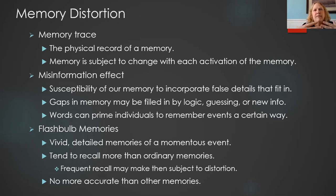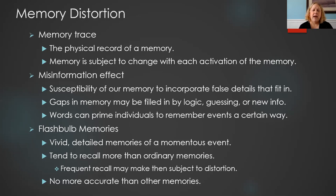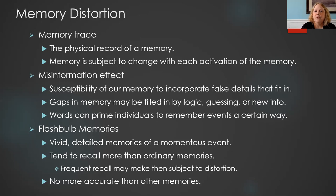Flashbulb memories are very vivid, detailed memories around very momentous times in our lives — things like 9/11, the coronavirus, or personal events like graduation, your 21st birthday, getting married, having children. Because these are so momentous and tied to extreme emotions, we tend to think we'll recall them better. But research actually shows we're no better at recalling those memories than other memories. These memories can be susceptible to change because we often go back and revisit them repeatedly, talk about them with more people, and might start adding new and different details.